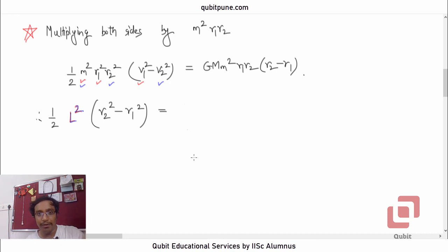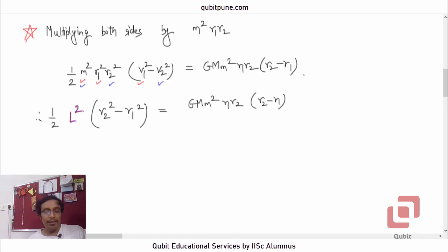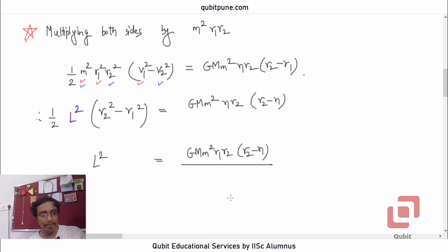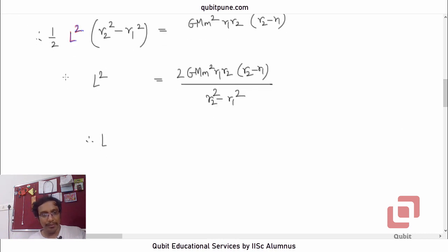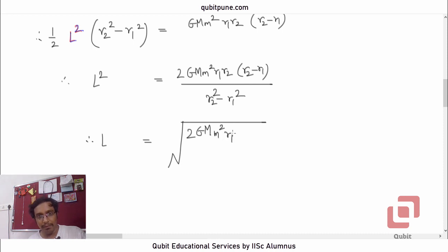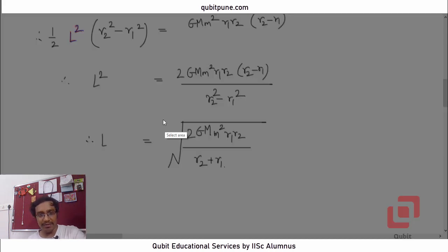The right-hand side remains as G·M_s·M²·R1·R2·(R2 − R1). So L² equals G·M_s·M²·R1·R2·(R2 − R1) divided by ½·(R2² − R1²). Since R2² − R1² = (R2 − R1)(R2 + R1), the (R2 − R1) cancels, leaving L = √(2·G·M_s·m²·R1·R2 / (R1 + R2)).